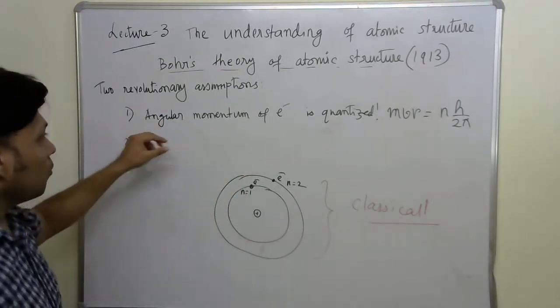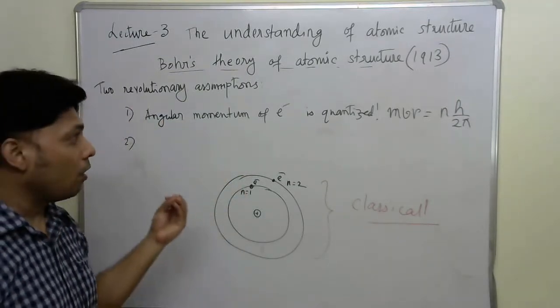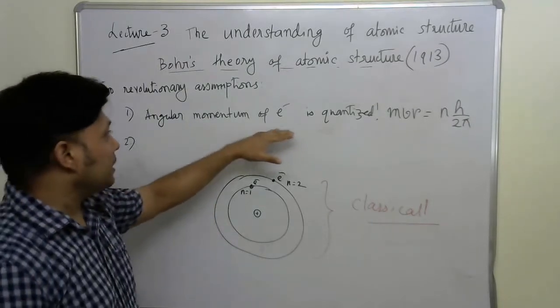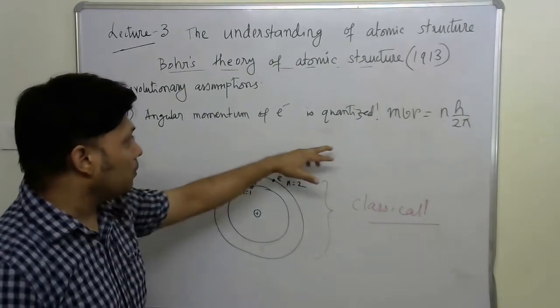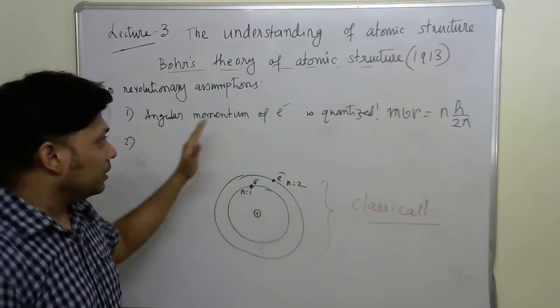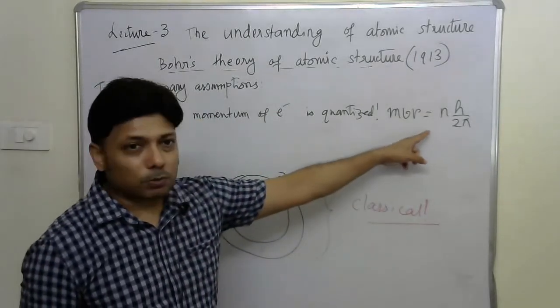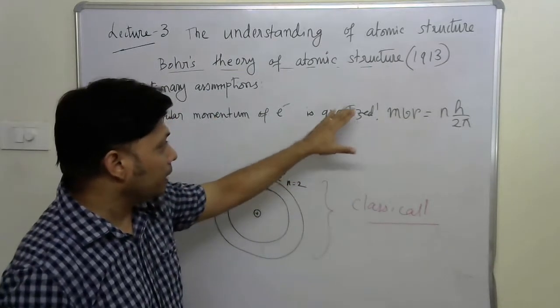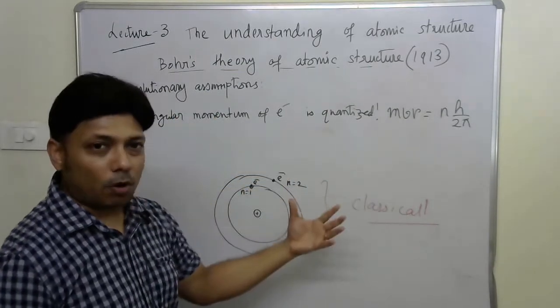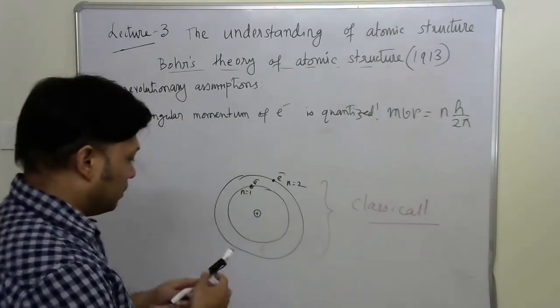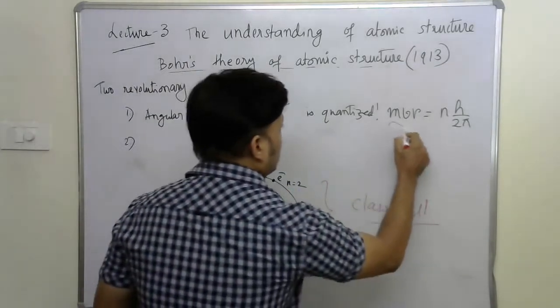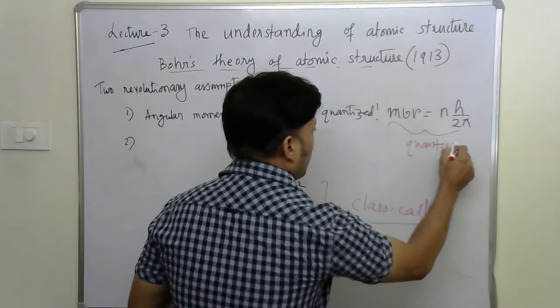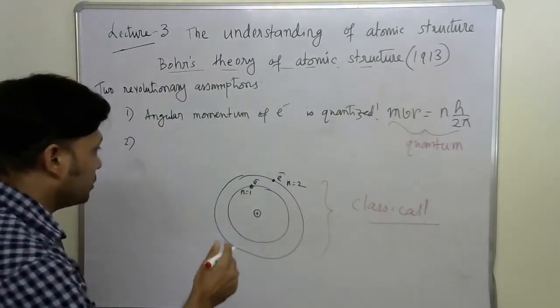The first assumption was the direct application of Max Planck's quantum theory. He said that the angular momentum of electron are such that these are integral multiple of h by 2 pi. In other words, the angular momentum of electron is quantized in an orbit. This assumption is purely quantum assumption. And not only that, Niels Bohr also suggested,